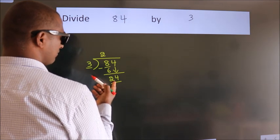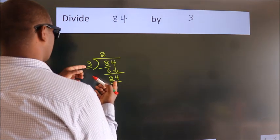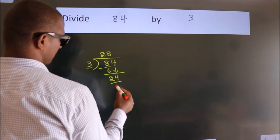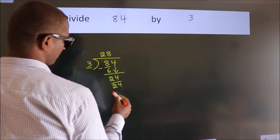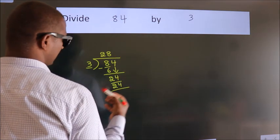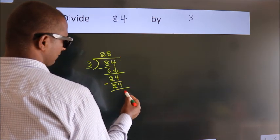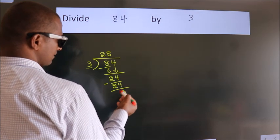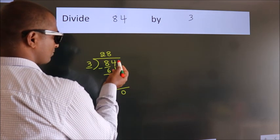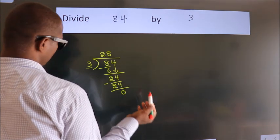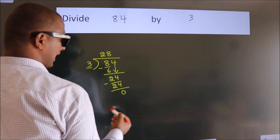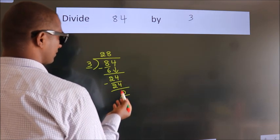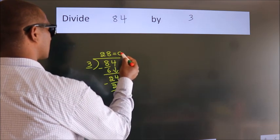When do we get 24? In the 3 table, 3 eights, 24. Now we subtract, we get 0. After this, no more numbers to bring it down. And we got remainder 0. So this is our quotient.